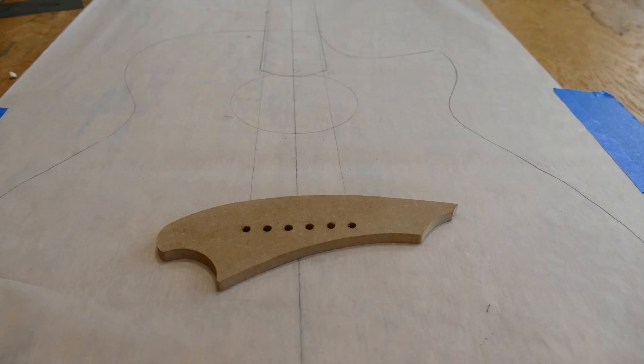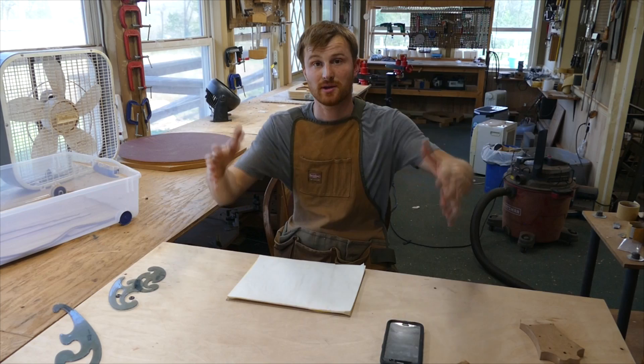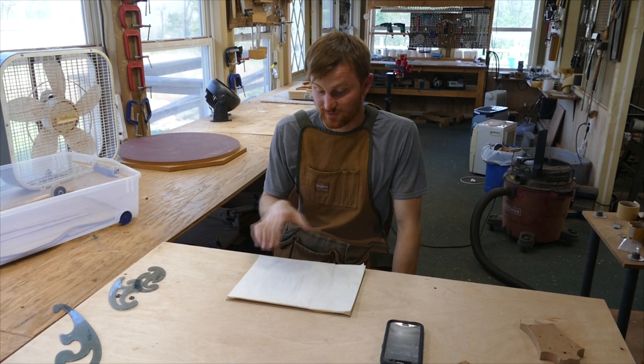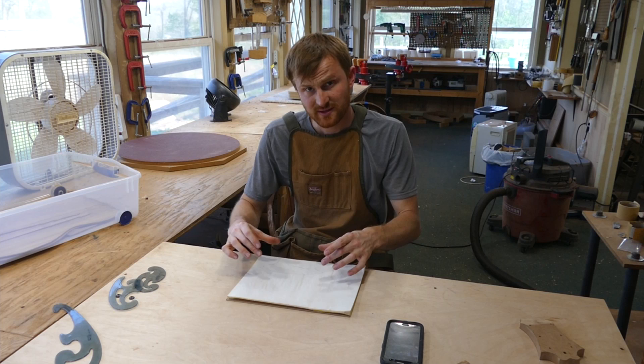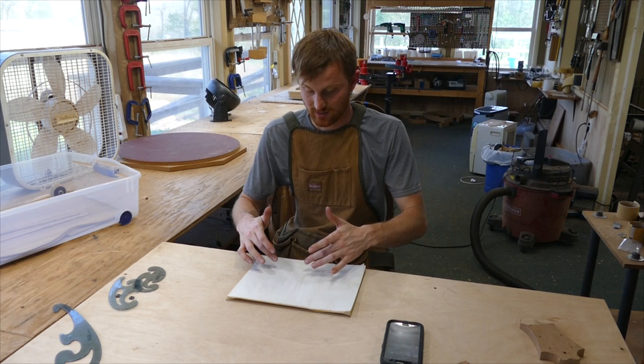So what I want to do now is lay out some design parameters. I'm going to draw out the body shape, the layout of the fretboard, and transfer my scale length down so I can figure out exactly where that saddle is going to go, exactly how I want to tip this aesthetically, how I want to locate it on the body, and then where the lie of the bridge pin holes will be.